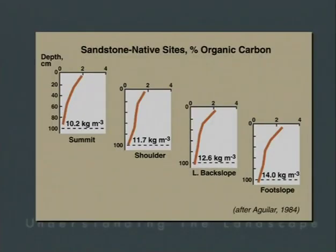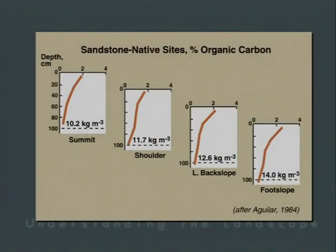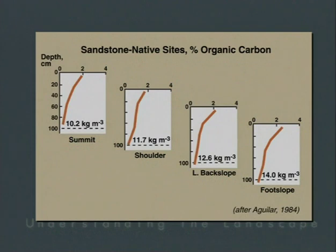The final example of Jenny's state factor approach evaluates the influence of topographic variations on soil organic carbon content. Data adapted from Aguilar in 1984 demonstrate variations in carbon storage within grassland systems as a function of topography. We see the summit (upland soils) to the foot slope (lowland soils), with large variations in total carbon stored. Organic carbon content is highest near the surface and decreases with depth, with the highest amounts of carbon stored in the foot slope position.